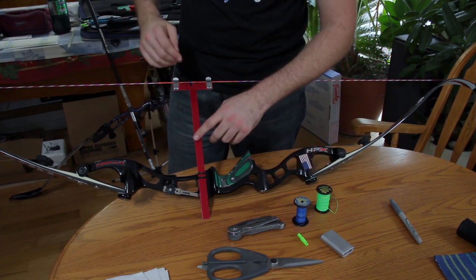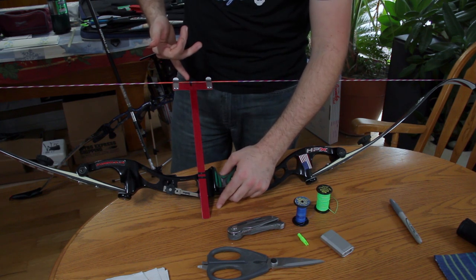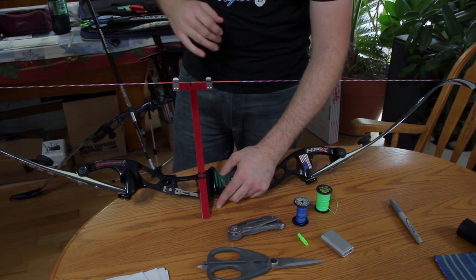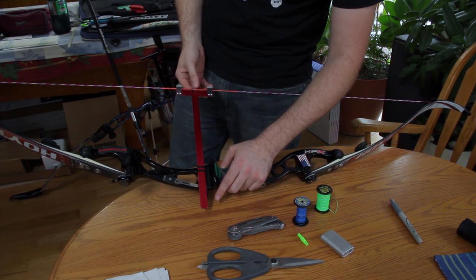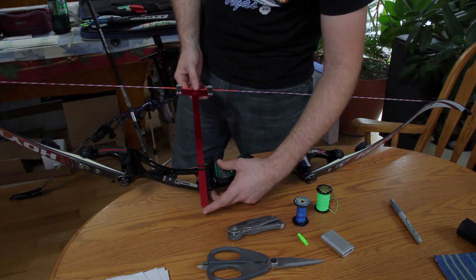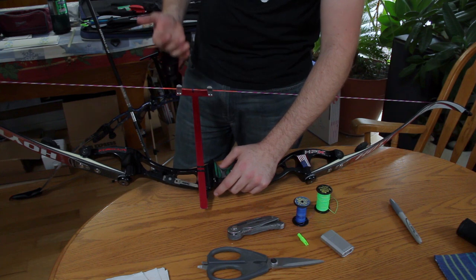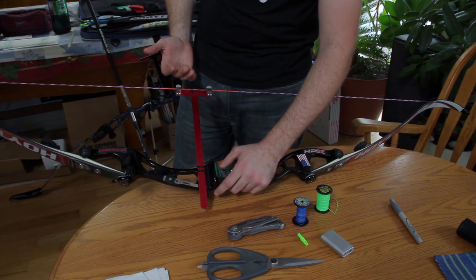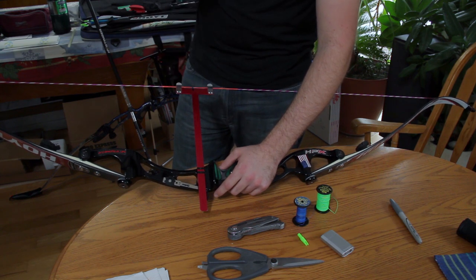Now, as you can see, I have my bow square on the string. I already have it pre-marked because I've done numerous knocking points in my time of shooting. So, I already have it pre-marked. I would recommend for somebody, for their first time putting a knocking point on, you probably want to start from 1/16th from the center.